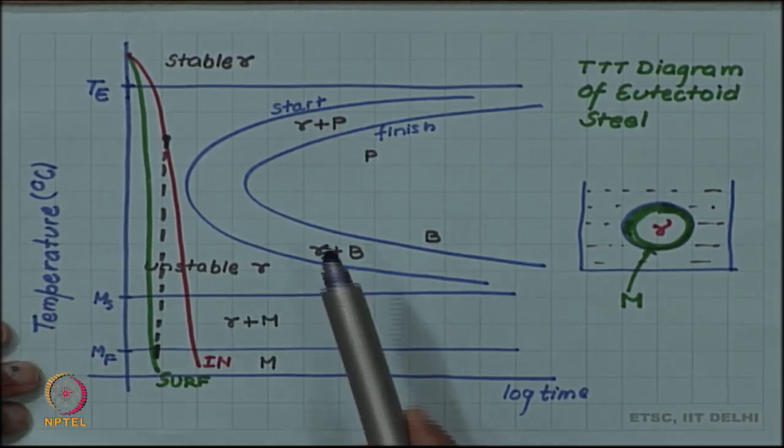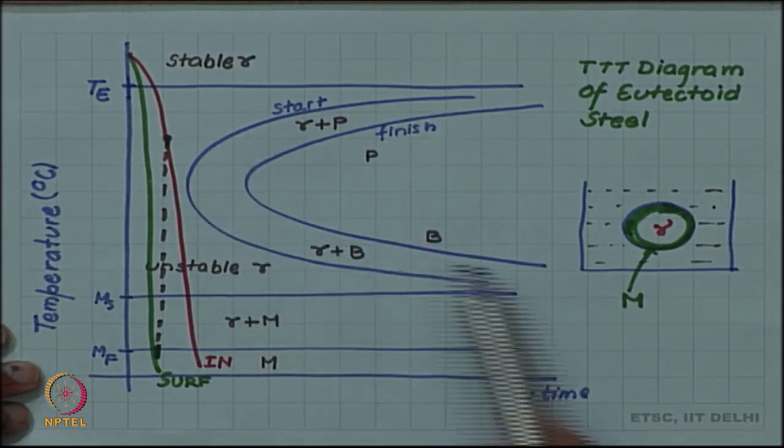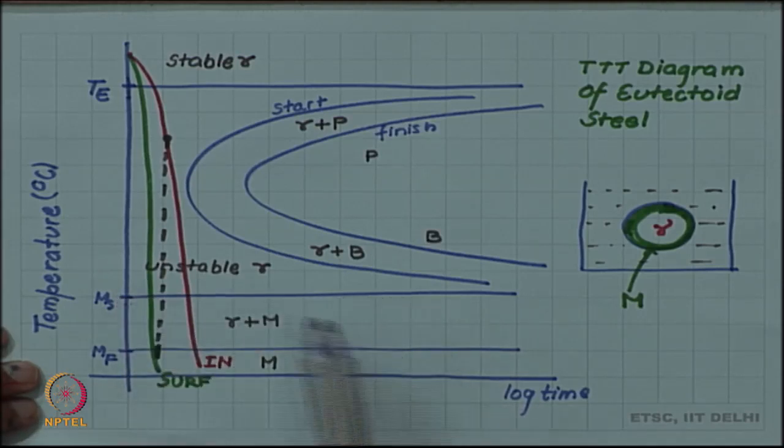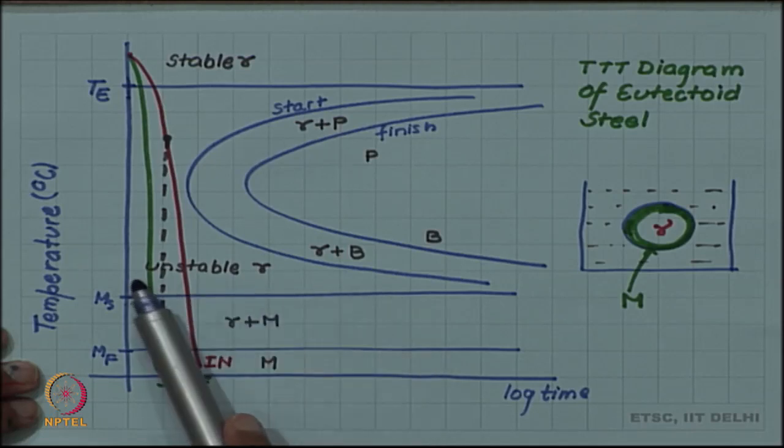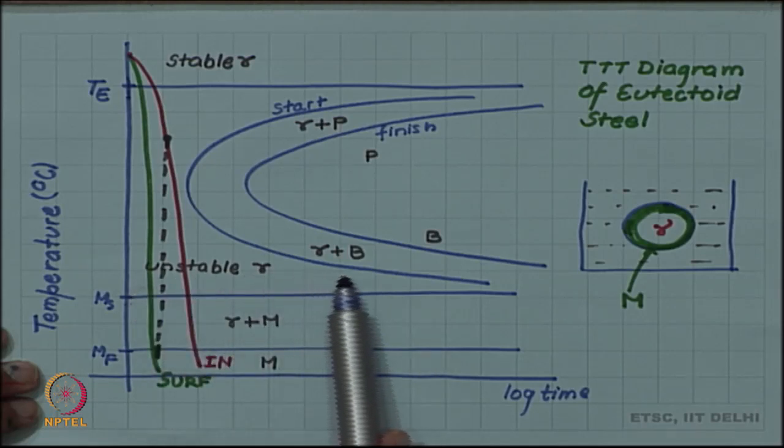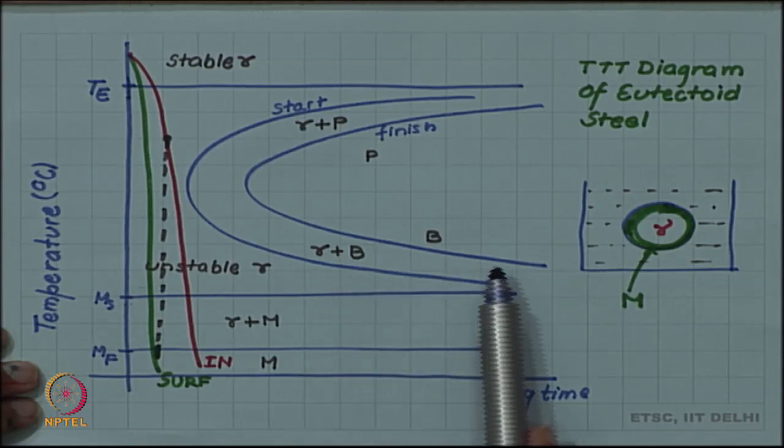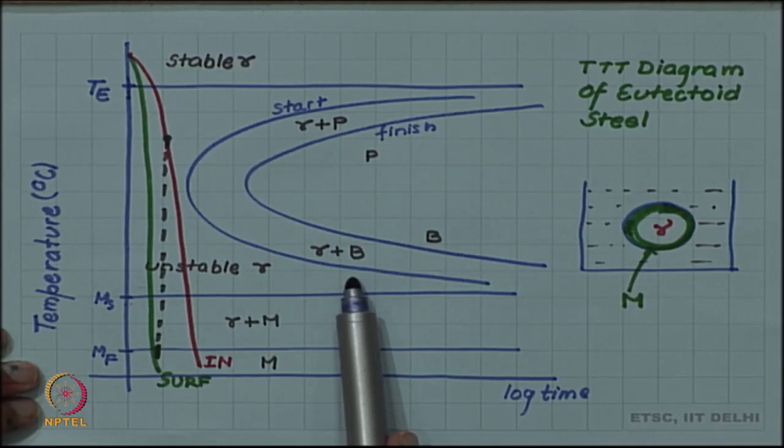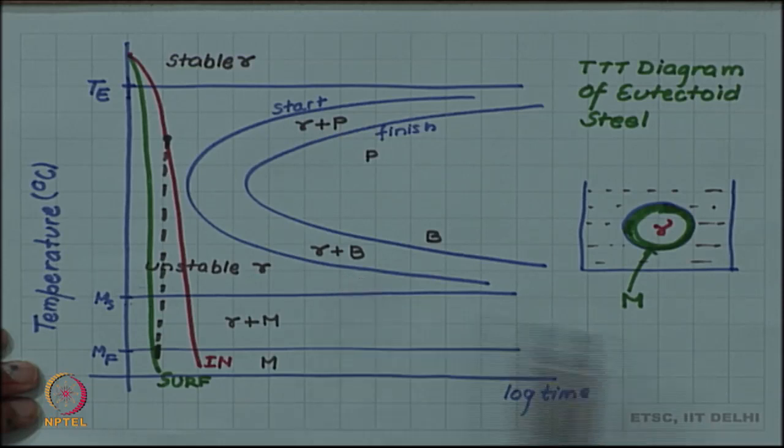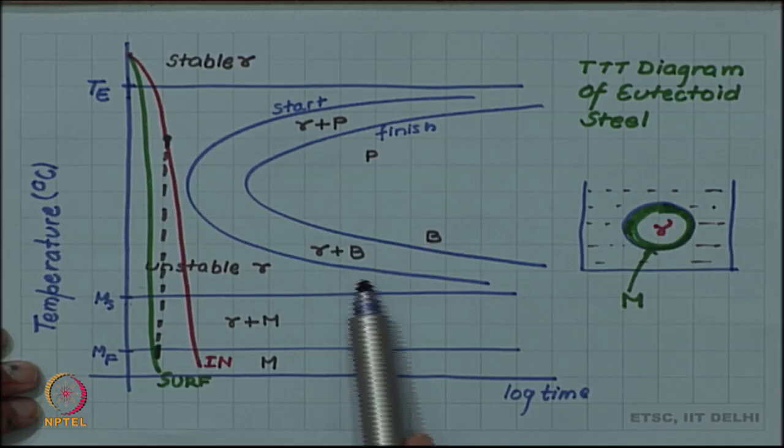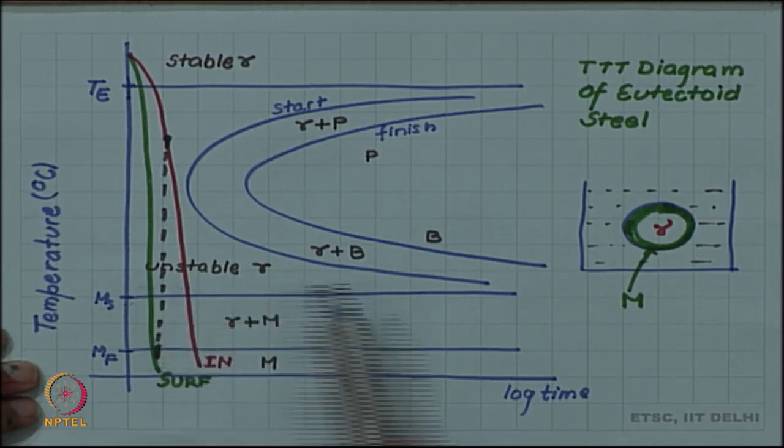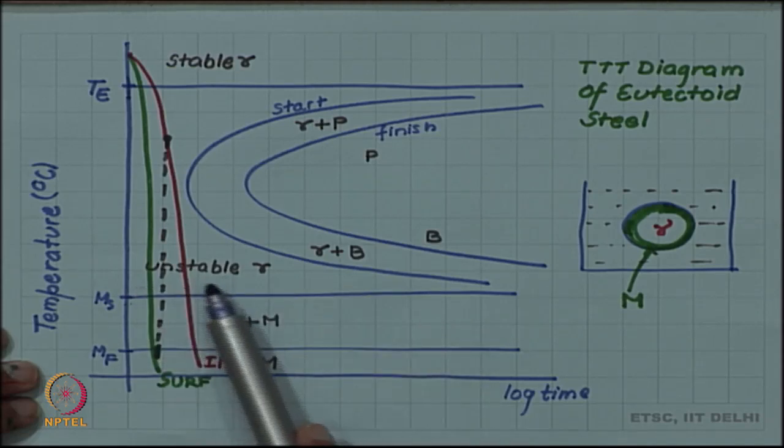Fortunately, the TTT diagram shows us a way out of this. If we just see above the martensite temperature, there is a long time interval in which there is no transformation happening. Before bainite starts to form, we have a lot of time available without any transformation. This time can be used to equalize the temperature of surface and inside of a component.